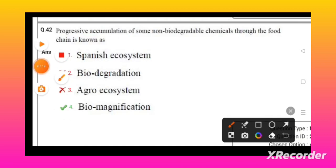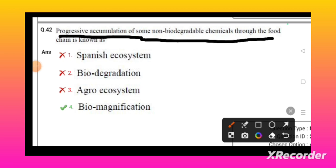Progressive accumulation of some non-biodegradable chemicals through the food chain is known as biomagnification. The accumulation of non-biodegradable chemicals from one trophic level to another trophic level leads to increase in their concentration - that is known as biomagnification.